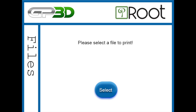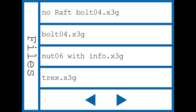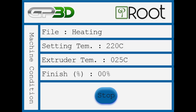To select the file, simply click on Select. You will be able to see all the files in your SD card. Simply select a file, and the next screen will show you all your statistics, your current temperature, your finish percentage.